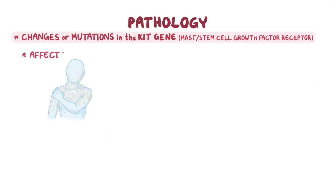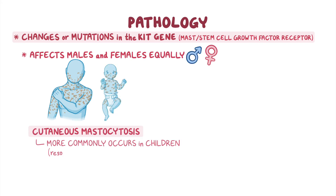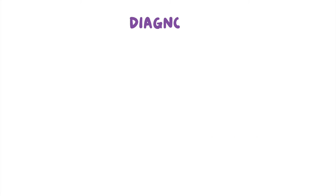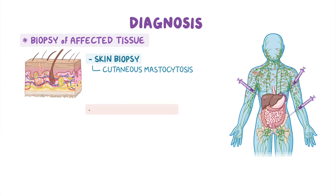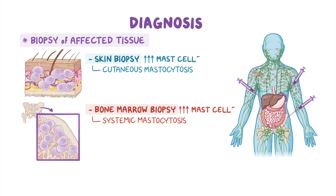Mastocytosis can affect males and females equally. Cutaneous mastocytosis more commonly occurs in children, typically resolving during puberty. Systemic mastocytosis largely affects adults and tends to persist throughout life. A diagnosis of mastocytosis can be confirmed by a biopsy of the affected tissue — a skin biopsy for cutaneous mastocytosis or a bone marrow biopsy for systemic mastocytosis — which would reveal a high number of mast cells. In systemic mastocytosis, mast cells in the bone marrow may also have an abnormal appearance and commonly have the D816V KIT mutation.